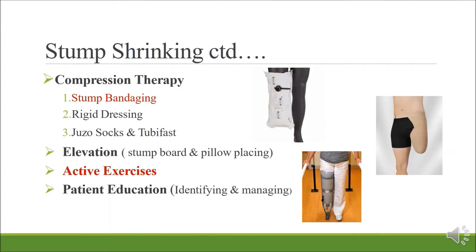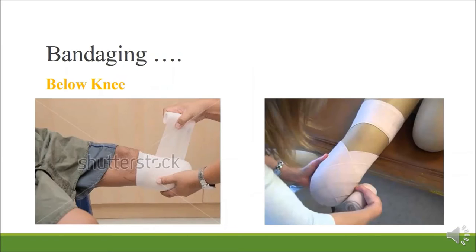For stump shrinking we use several techniques: compression therapy, elevation, active exercises and patient education. In our hospital, bandaging is the compression therapy we use most frequently. Key considerations include always maintaining a figure-of-eight at the stump region, ensuring the stump bandaging is free of creases, and that the pressure is adequate — not too much pressure.